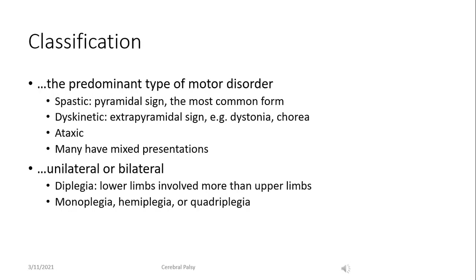The classification of cerebral palsy relies on the predominant type of motor disorder encountered on examination. Spasticity is the most common motor sign seen in patients with cerebral palsy. Dyskinesias such as dystonia may also be encountered. Ataxic forms are on occasion seen, and many of these patients may have mixed presentations, for example having spasticity and dystonia.